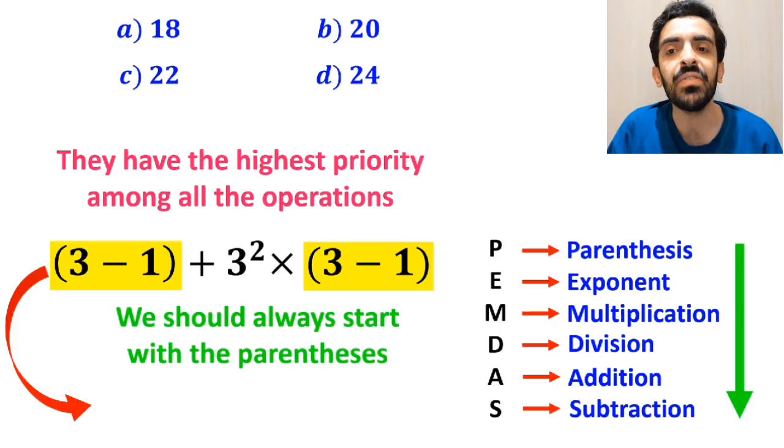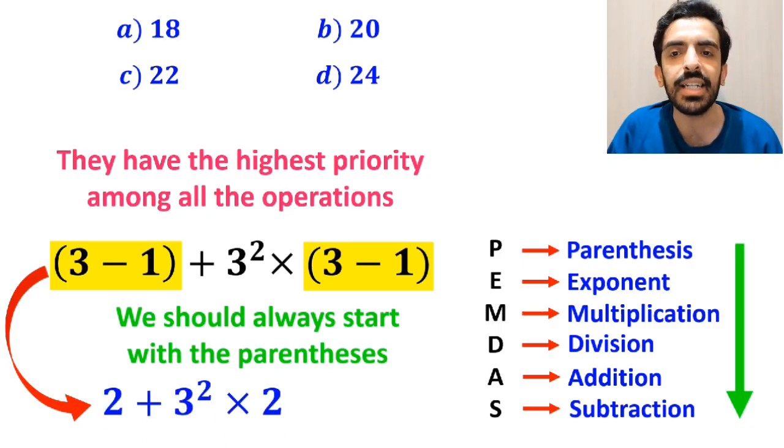So instead of the original expression, we can rewrite it as 2 plus 3 squared, then multiply it by 2.